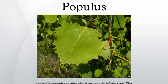Populus section Populus: Euroaspens and white poplar. Circumpolar subarctic and cool temperate, and mountains farther south. Includes Populus tremula (Euroaspen, Common Aspen, Eurasian Aspen, European Aspen), Populus adenopoda (Euro-Chinese Aspen), Populus alba (White Poplar), Populus canescens (Grey Poplar), Populus davidiana (Korean Aspen), Populus grandidentata (Big Tooth Aspen), Populus sieboldii (Japanese Aspen), and Populus tremuloides (Quaking Aspen or Trembling Aspen).